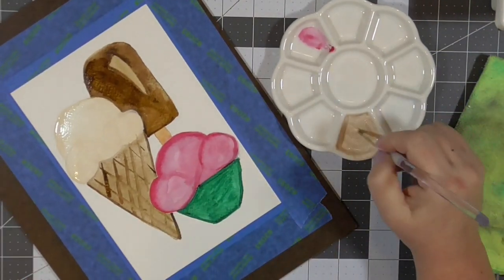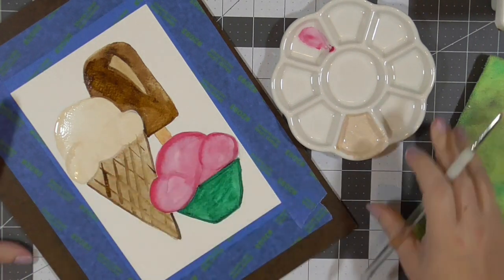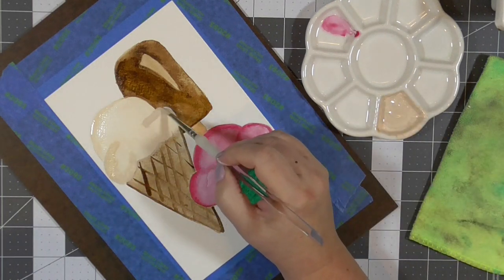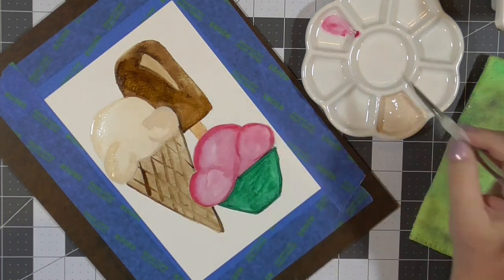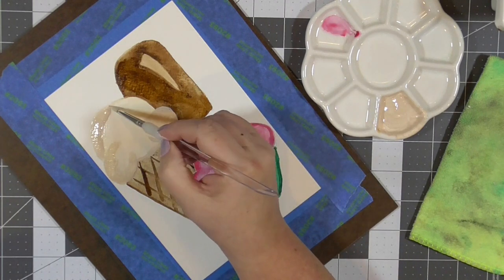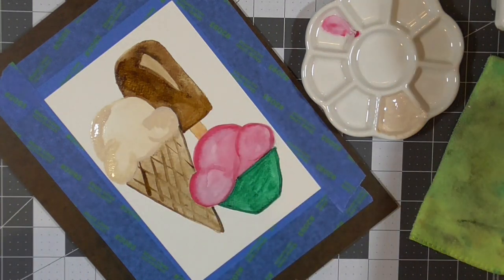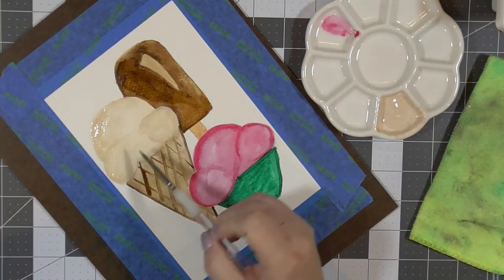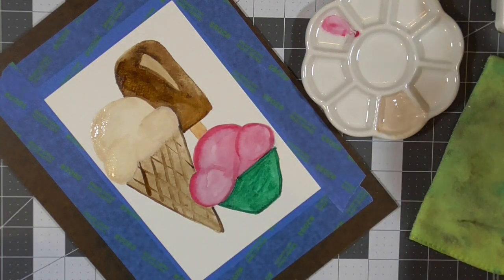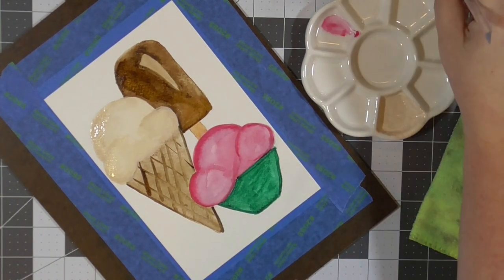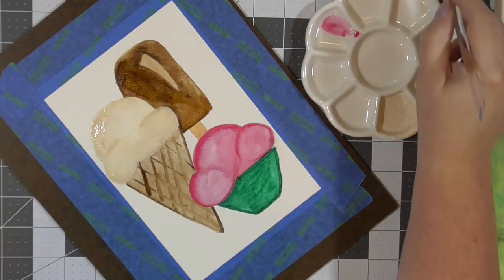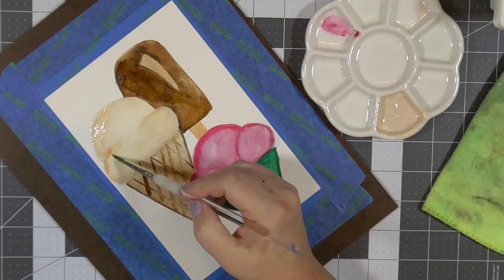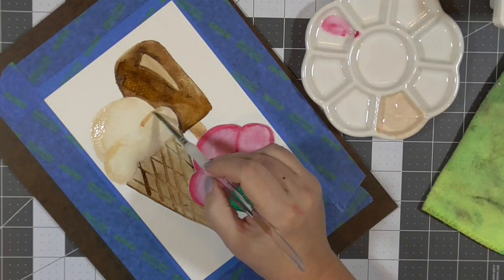Even my husband who likes vanilla ice cream likes these fudge bars. Okay. In order to add shadow to my vanilla, I added a little bit of Brown to that well of vanilla colored paint I had already created. And I'm just kind of adding some shadows where the scoops are meeting. I'm adding some shadows to where the scoops meet the cone and of all of the things on this page, this scoop of vanilla ice cream, I think turned out the absolute best, which just, you know, because chocolates my, I wish the chocolate had turned out the best, but whatever.